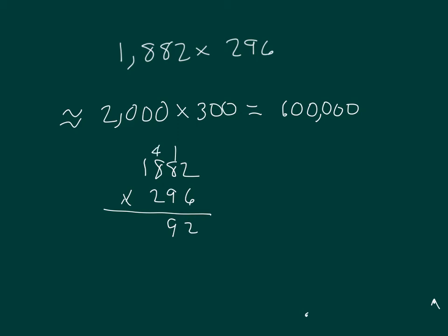6 times 8, 48, plus 4 is 52. 2, regroup of 5. 6 times 1 is 6, plus 5 is 11. There's our first step for our partial product.